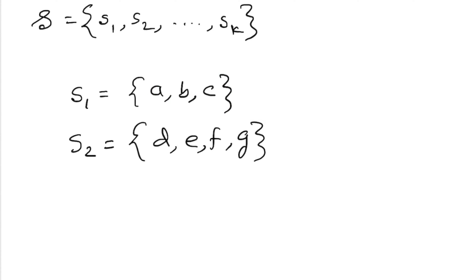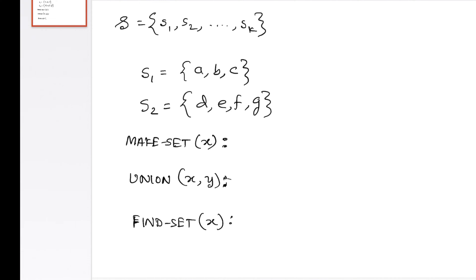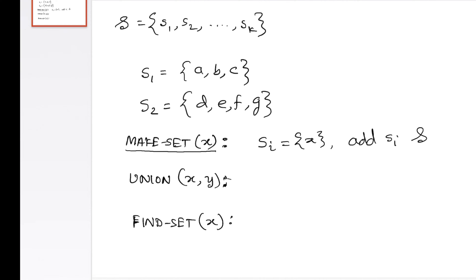In a disjoint set data structure we maintain three operations. The first operation is called make_set, given an element. The second is union of two elements. The third is find_set of an element. Make_set creates a new set s_i which contains only the one element given as the parameter, then adds s_i to the collection S. The representative of s_i will be that element, since when we call make_set exactly one element is present in the newly created set and it becomes the representative.